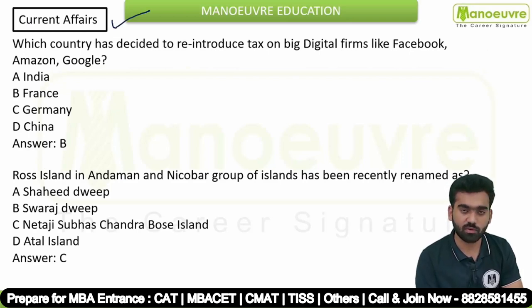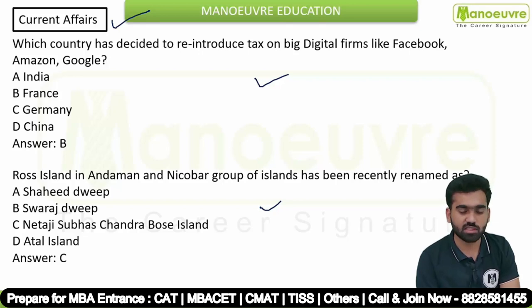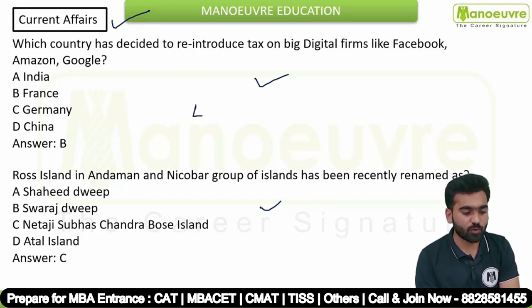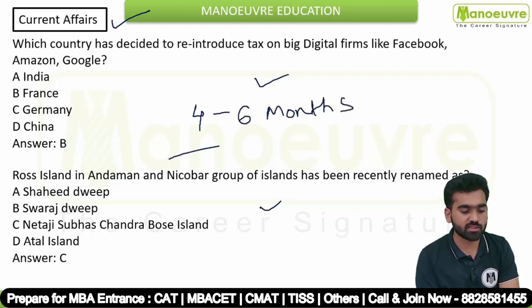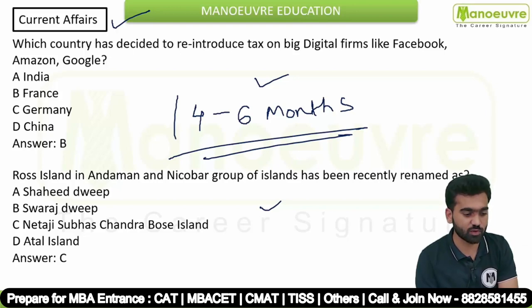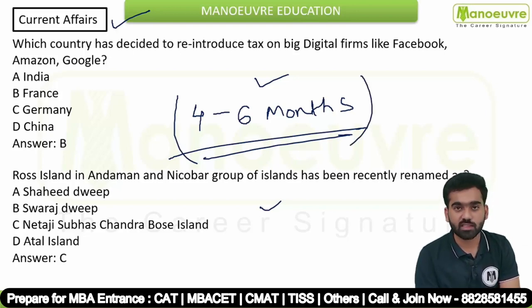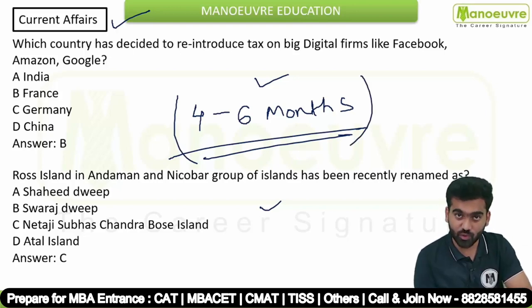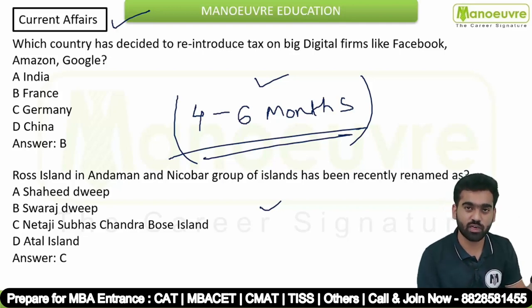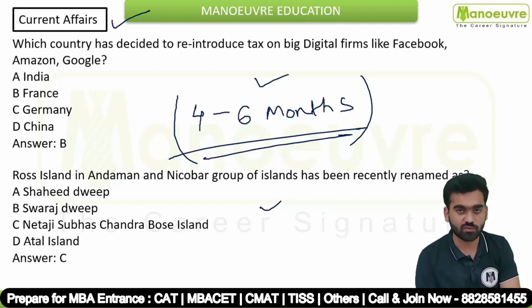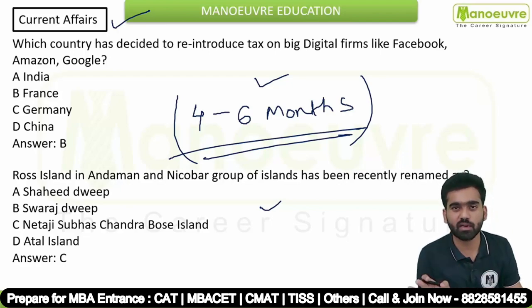These are just two example questions I showed you. We can expect such questions in your examination. The current affairs questions asked are mostly from the 4 to 6 months prior to the exam. We can expect the same in 2022, or we may also see the 2020 pattern. That's why don't rely on any single pattern — prepare for both scenario A and scenario B.